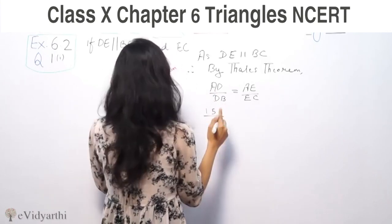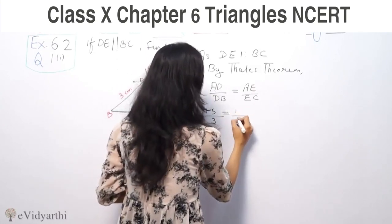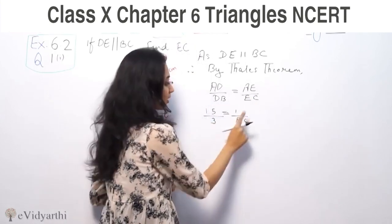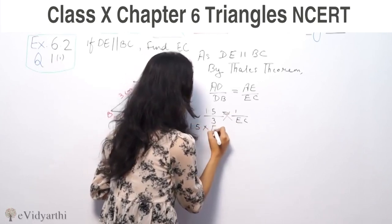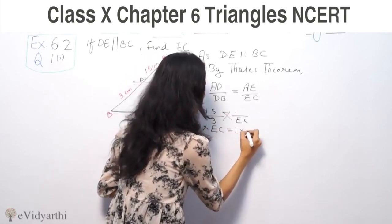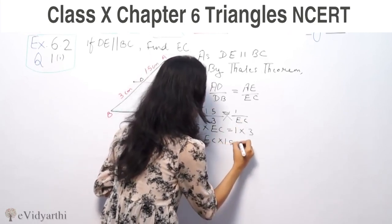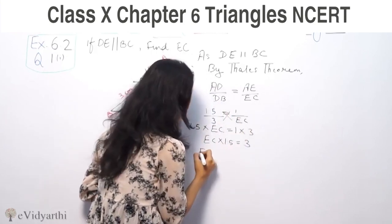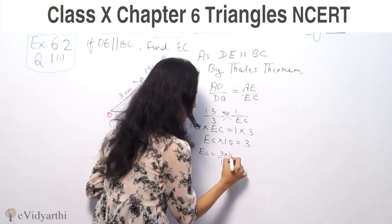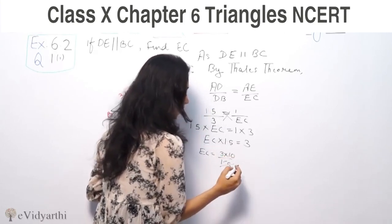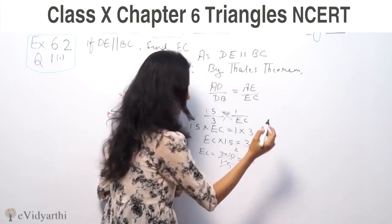AD value we have 1.5 cms, DB value we have 3 cms, AE value we have 1 cms, EC we need to find. So we have 1.5 upon 3 equals 1 upon EC. Cross multiply, so 1.5 into EC equals 1 into 3. EC into 1.5 equals 3. So EC equals 3 upon 1.5. Remove the decimal, multiply by 10, we get 30 upon 15, which cancels to 2.